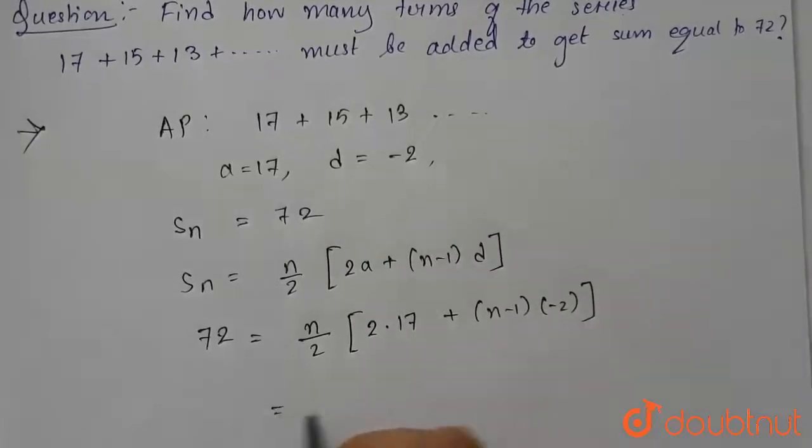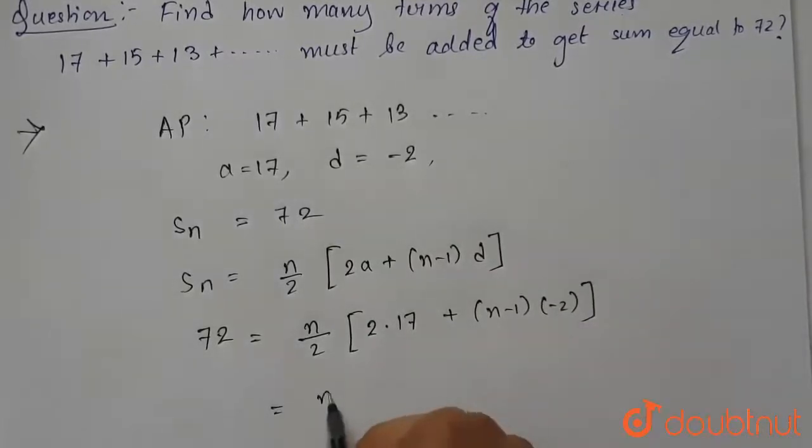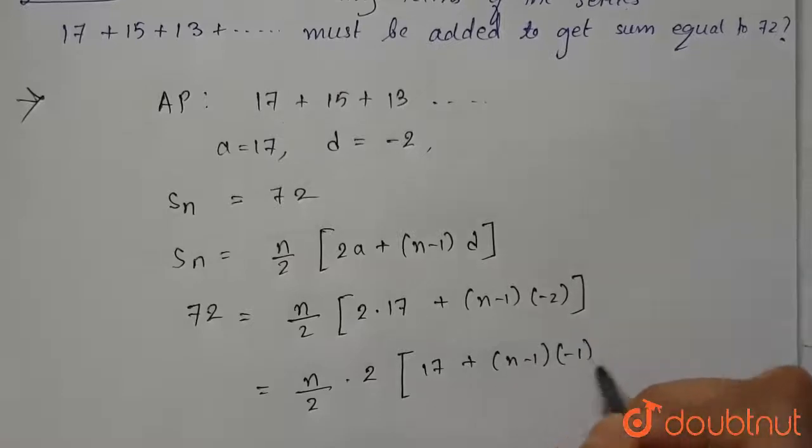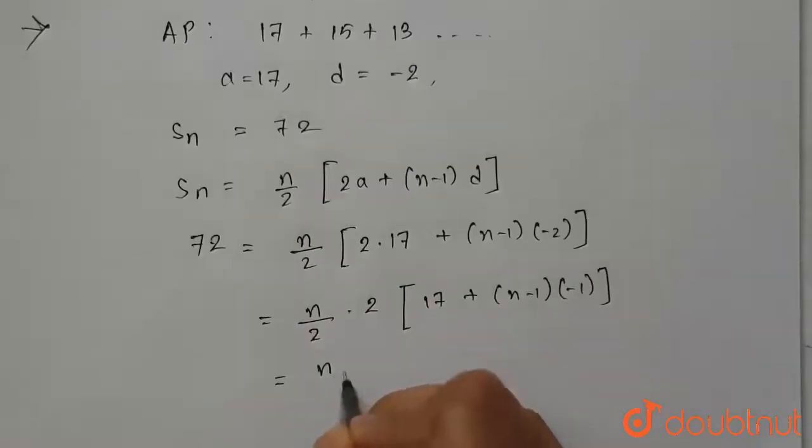Now from here we can take 2 common, so we get n/2 × 2 × [17 + (n-1)(-1)], so from here we get n/2 and this side we have 72.